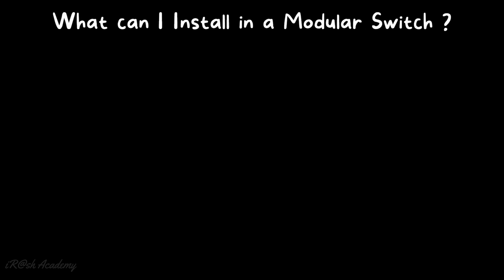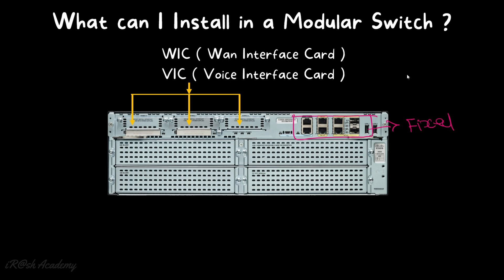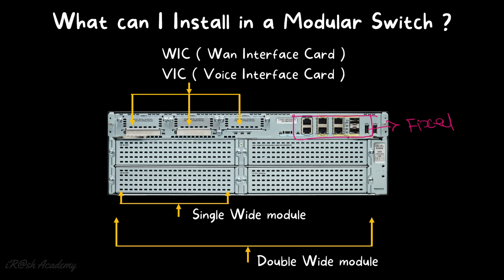In a modular switch, there is a section of fixed interfaces and multiple module slots for WAN or voice interface cards. There are also single wide modules and double wide modules. A single wide module is compatible with half the switch size, while a double wide module is compatible with the full switch size. As per requirement, we can install either type into the switch or router.